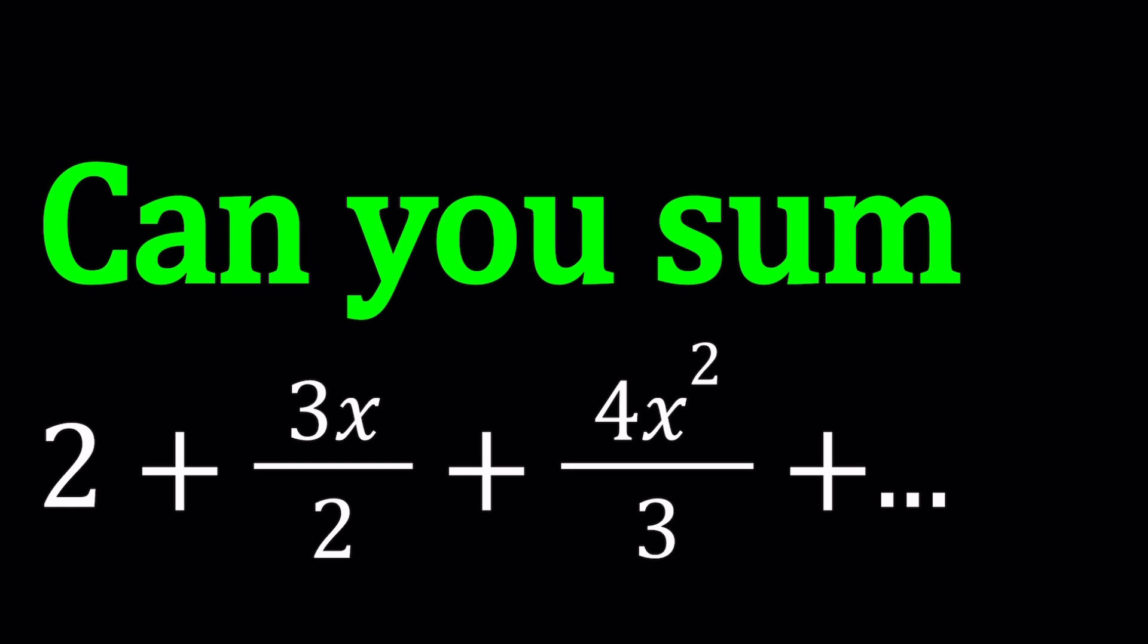We have 2 plus 3x over 2 plus 4x squared over 3 plus 5x cubed over 4, where the coefficients are 2 over 1, 3 over 2, 4 over 3, 5 over 4, so on and so forth. Hopefully you get the idea. We're going to be evaluating the sum in terms of x.